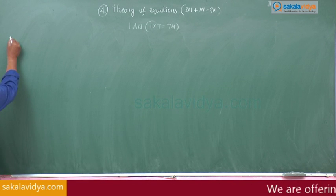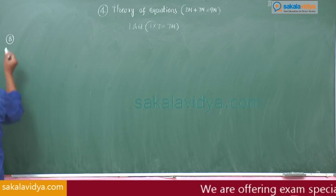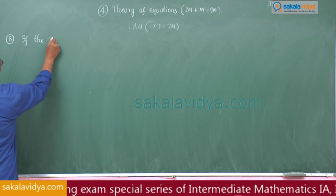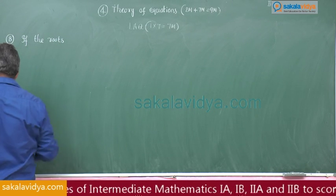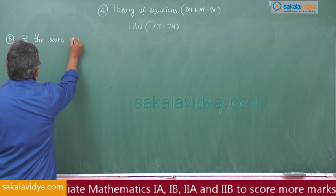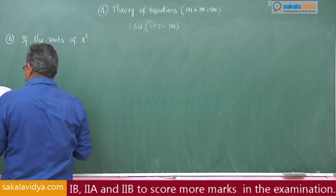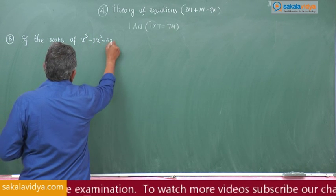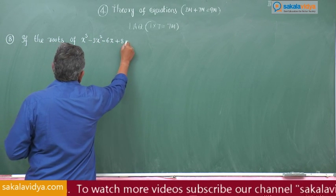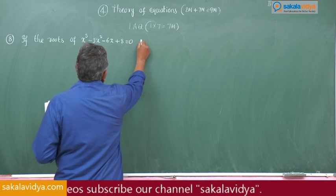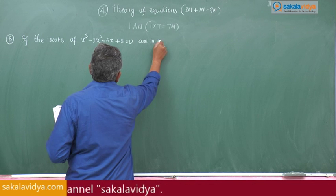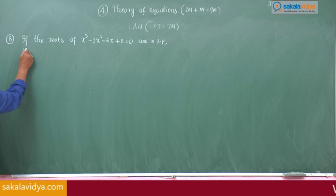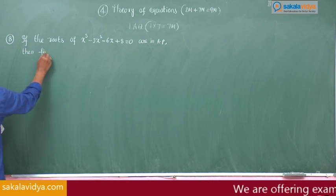Next, eighth problem: if the roots of x³ - 3x² - 6x + 8 = 0 are in arithmetic progression, then find them.